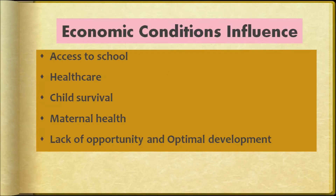Economic conditions also affect access to school, healthcare, child survival, maternal health, and opportunities for optimal development. Education of children is improving — we see higher enrollment and higher retention rates. Many girls are deprived, but enrollment is increasing. Culturally, girls are often believed to stay at home because of early marriage. We must ensure both girls and boys get equal opportunity and can make the choices they want.